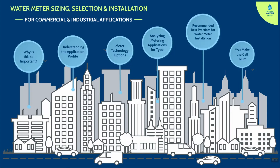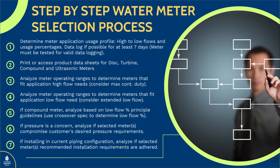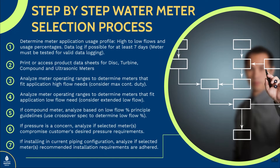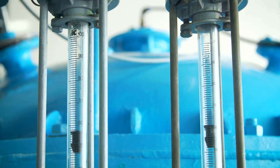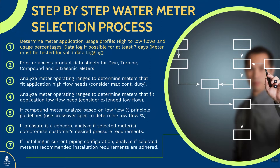I'm extremely excited about this lesson because I've developed this custom step-by-step process that's going to walk you through how to properly size and select a meter. It's really seven distinct steps. In order to determine the meter application, we talked about data logging — you need to understand the highs, the low flows, and the usage percentage of each. How often is it in the high flow condition? How often is it in intermediate flows? How often is it in low flows? When you understand that, you can properly size the meter. The best way to do that is through data logging.